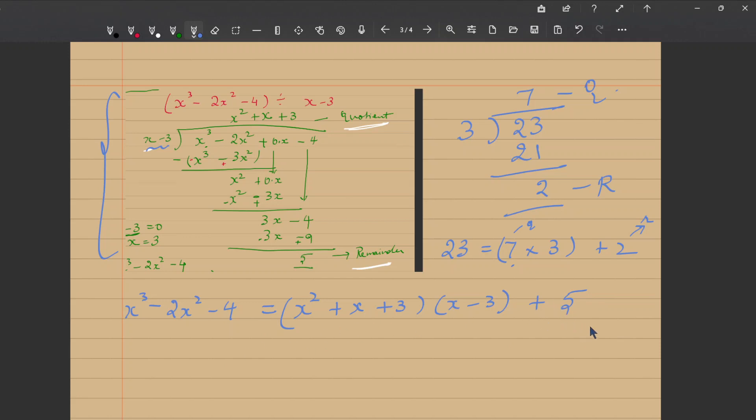And this holds good for any polynomial. Whatever polynomial is given to you, you can express it as a product of the quotient. You can divide any polynomial. So you can express it as a product of the quotient into any linear polynomial x minus a plus the reminder. The reminder is also a polynomial in x, r of x.